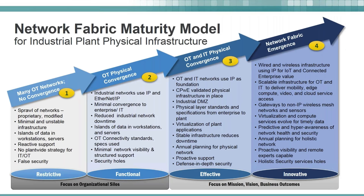We also want to discuss with clients and customers where they are in what we call the network fabric maturity model. It goes from being very restrictive — where you've got many OT operational technology networks and very little convergence, sprawl over the networks, islands of automation, no real strategy, and no security — all the way up through more mature stages.